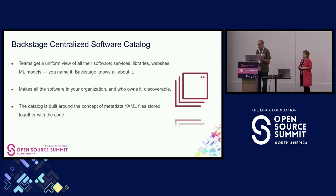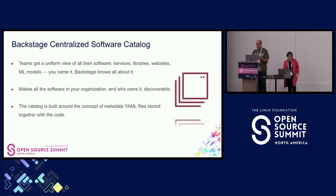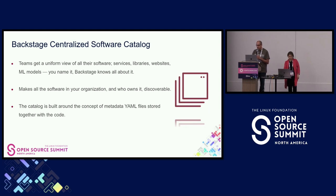Now let's deep dive into each of these five main points. The software catalog is where you can find everything your organization allows you to see — applications, libraries, websites, clusters, infrastructure, databases, Kafka, and more. It's especially great when someone is new to a company or joining your team.